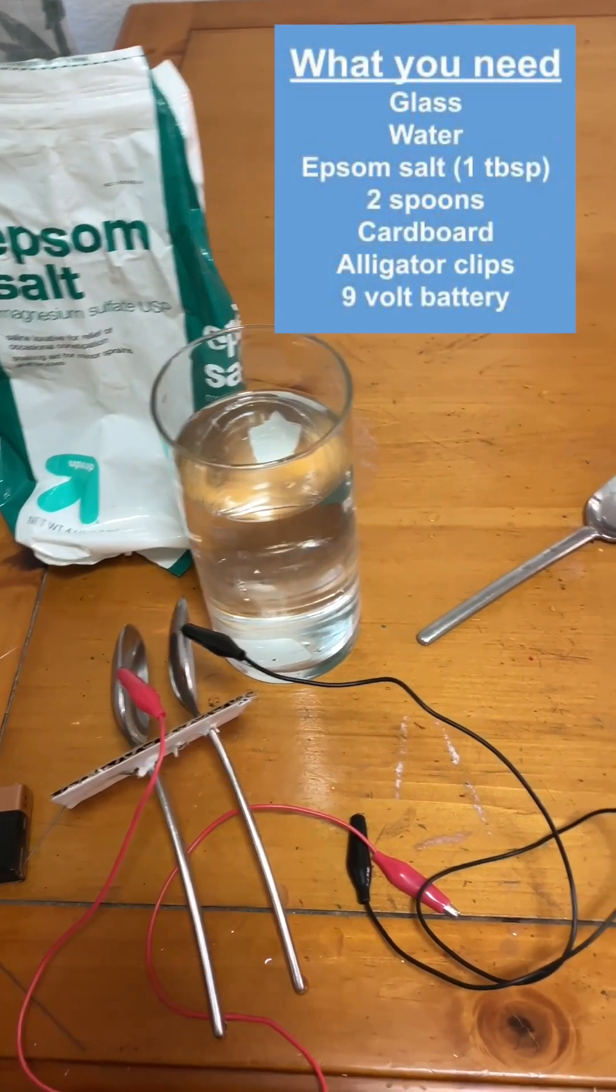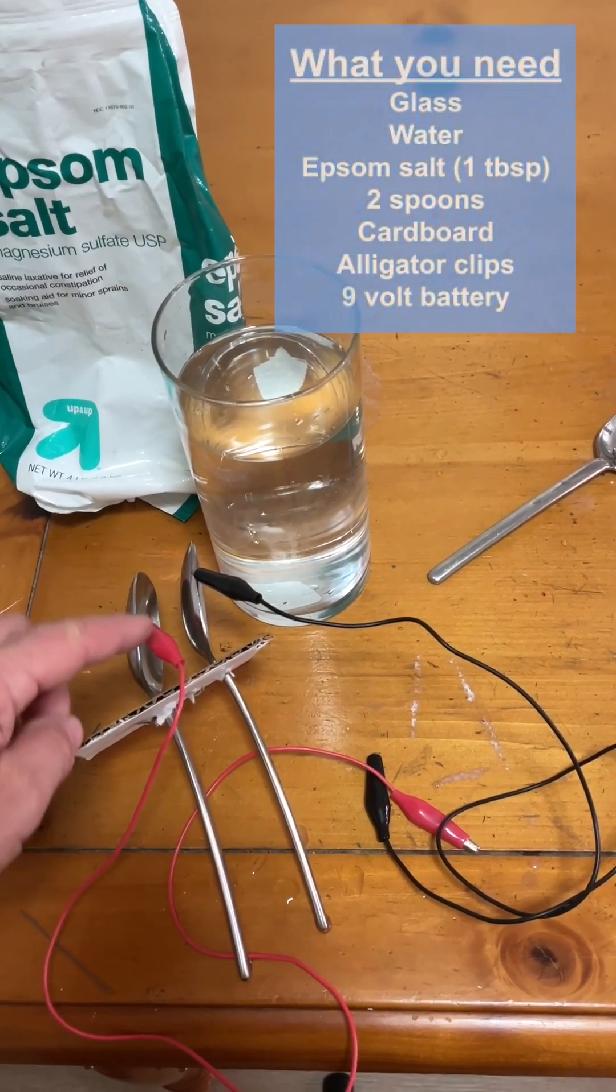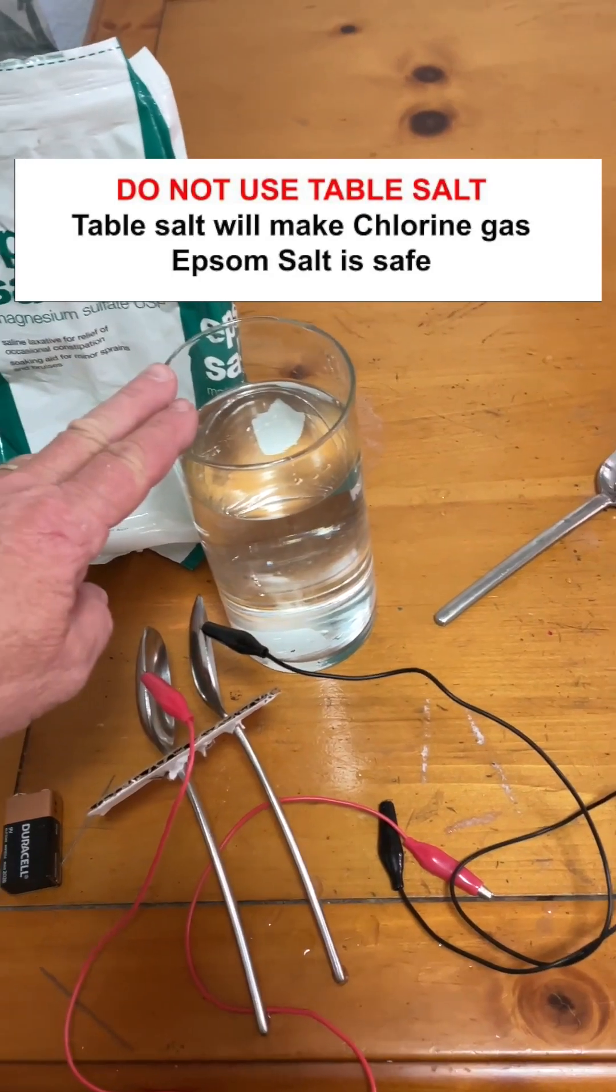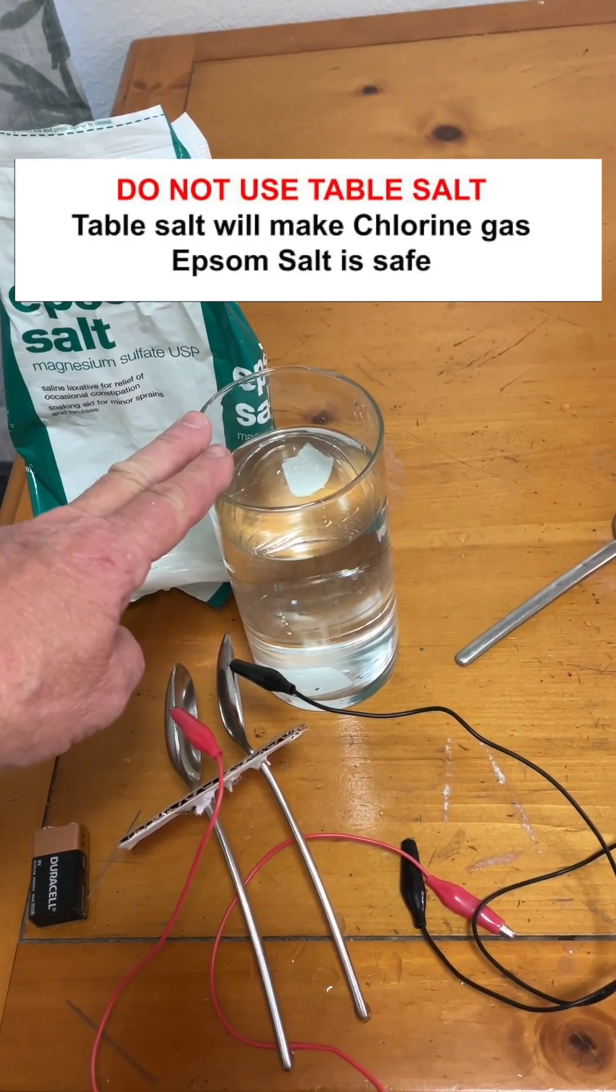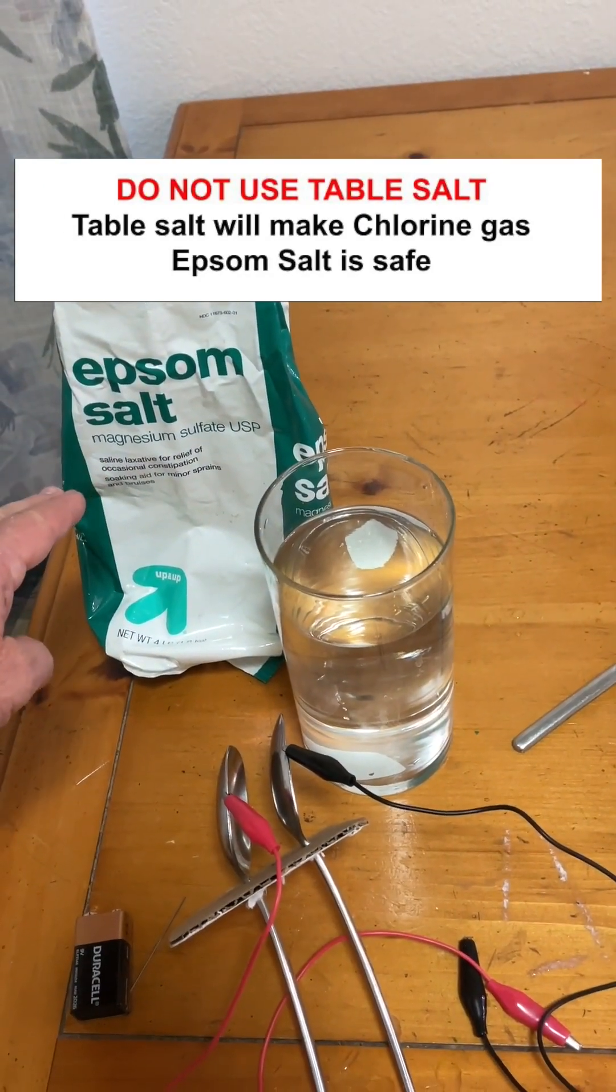What you need is a 9-volt battery, a piece of cardboard, two spoons, alligator clips, a glass with distilled water or regular water, and Epsom salt.